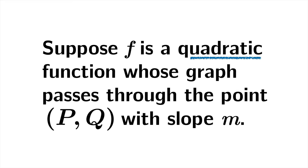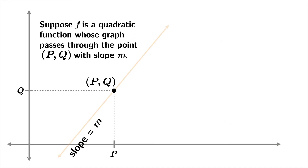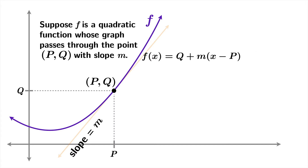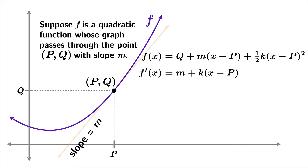Now suppose f is a quadratic function whose graph passes through the point (p, q) and still has slope m at that point. Our quadratic function should go through with tangent slope m at the point (p, q). The formula adds a quadratic piece: one-half k times (x − p) squared. The factor of one-half is there because the power rule brings down a 2, which cancels the half, giving f′(x) = m + k(x − p), and then f″(x) = k. So k itself is the value of the second derivative.